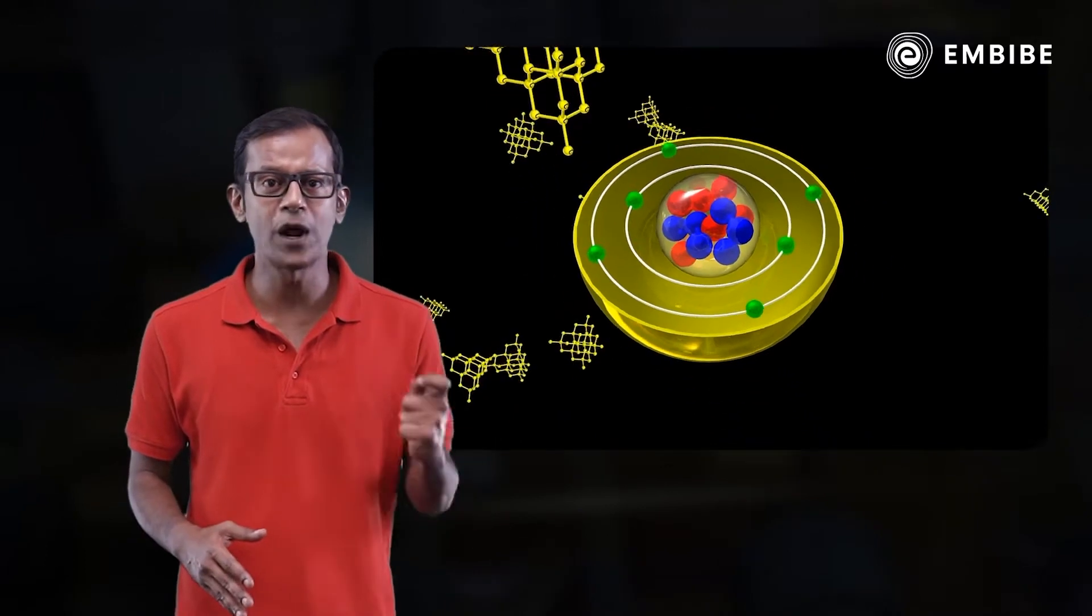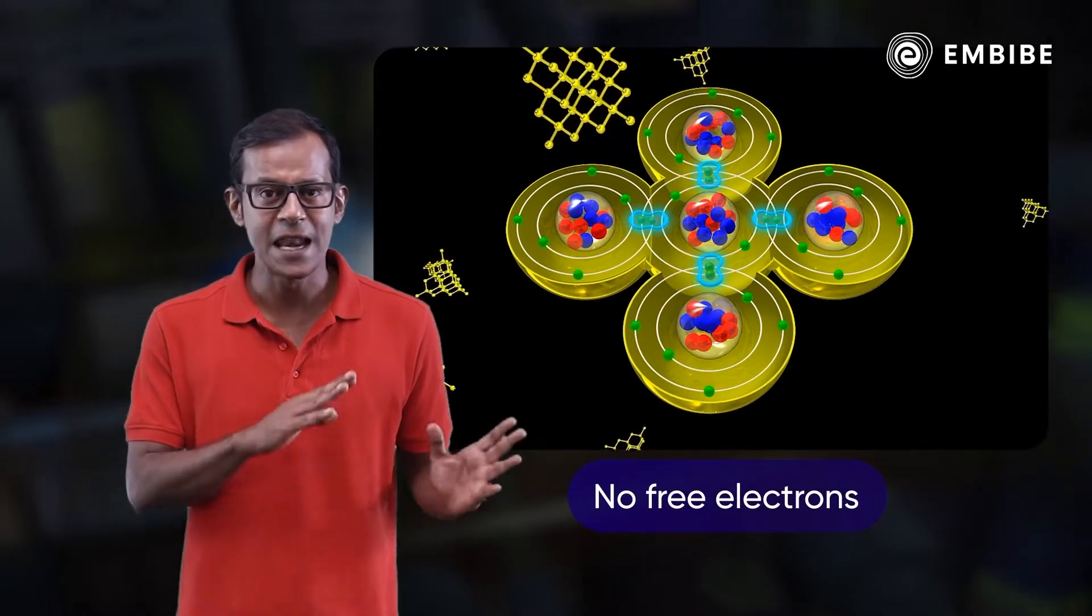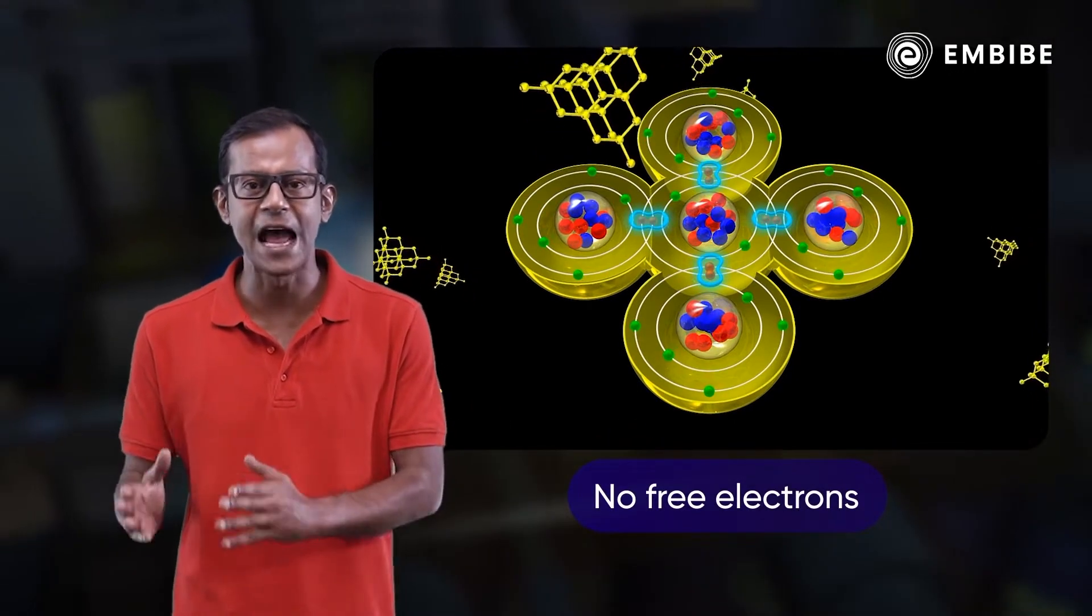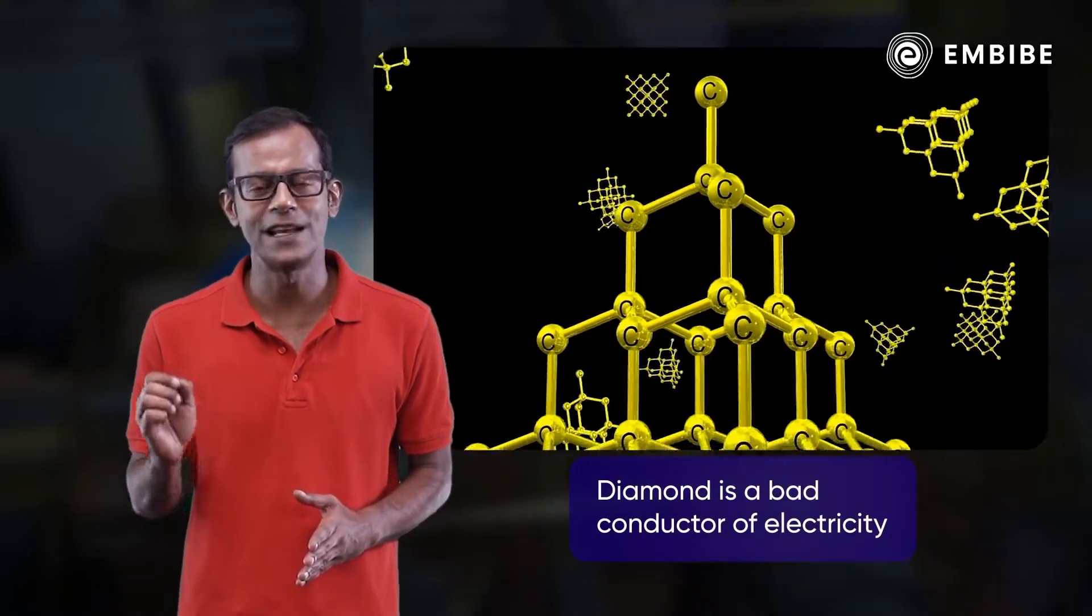It shares all four electrons with four other carbon atoms, so there are no free electrons left in the carbon atoms. Thus, diamond is a bad conductor of electricity.